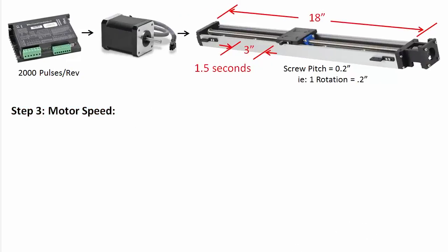How fast does the motor need to turn to do this? Well, we need to move 3 inches. The 0.2 pitch screw says 1 revolution moves us 0.2 inches so we need 15 revolutions to move 3 inches. We want to do that in 1.5 seconds so we need to average 10 revolutions per second, which is 600 RPM.